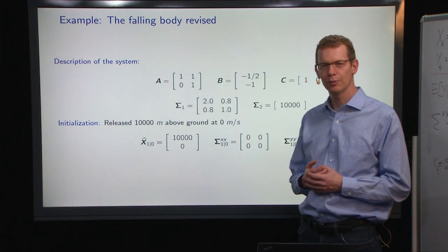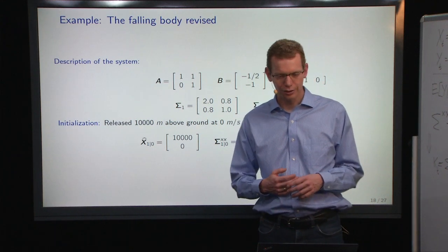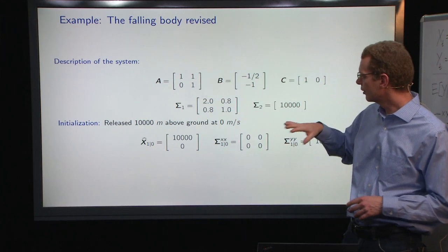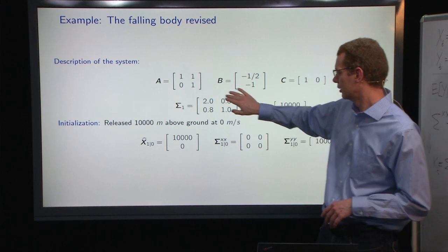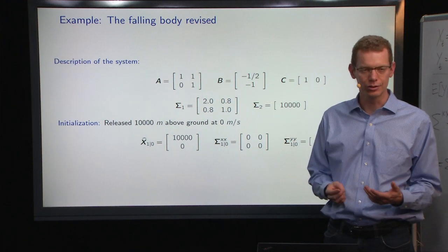Let's get back to the falling body. We've got the system defined previously with these parameters here, and let's just assume that there's a little bit of noise on the system, and then the observation noise is quite a bit larger.